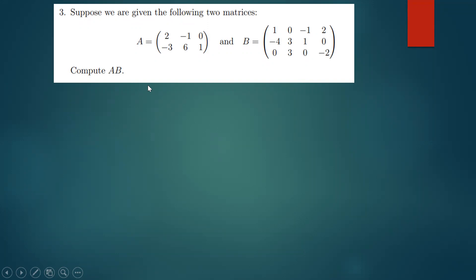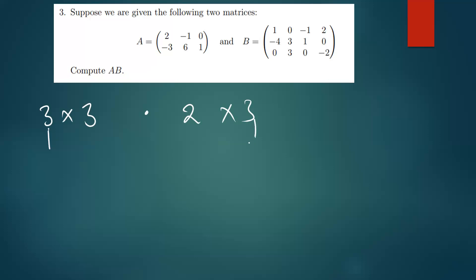The next question involves multiplying two matrices A and B. Multiplication of matrices is done by multiplying rows by columns. One important thing: if you have a 3×3 matrix multiplied by a 2×3 matrix, you take the outer dimensions — the result will be 3×3. In this case we have a 2×3 matrix being multiplied by a 3×4 matrix.